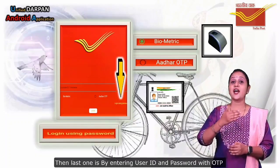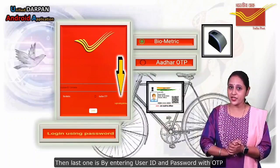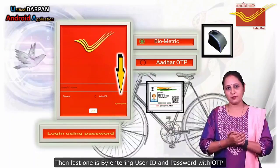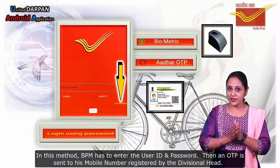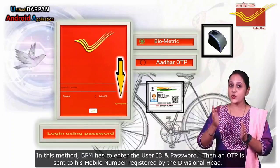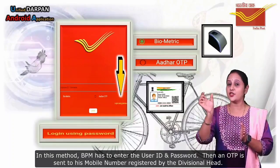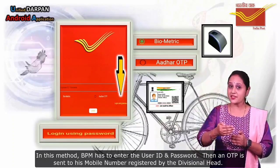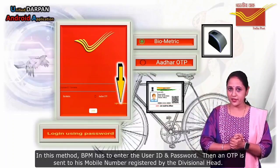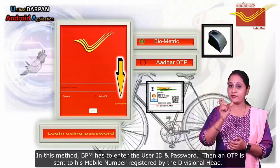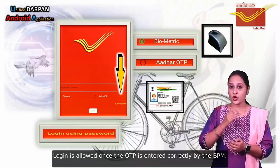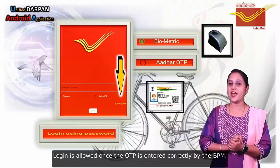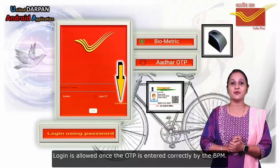The last login option is by entering the user ID and password with OTP. In this method, the BPM has to enter the user ID and password. Then an OTP is sent to his mobile number registered by the divisional head. Login is allowed once the OTP is entered correctly by the BPM.